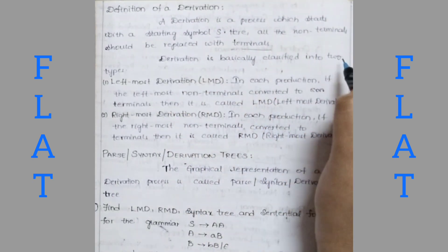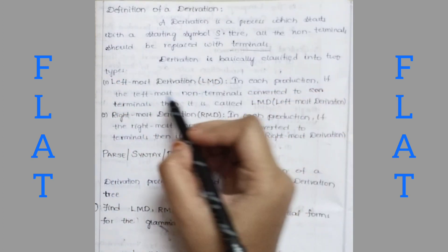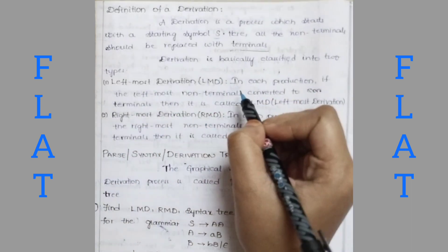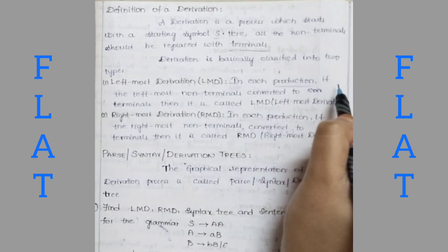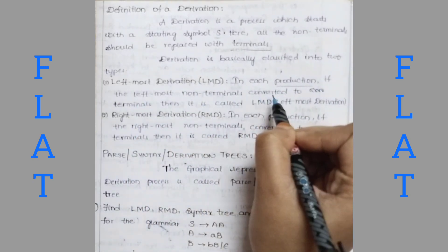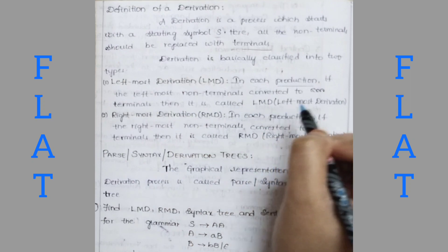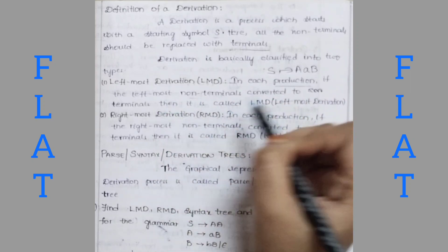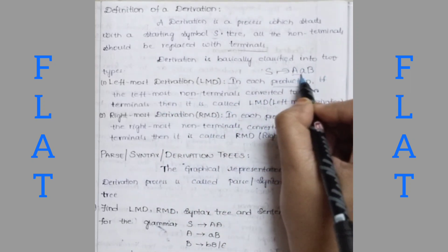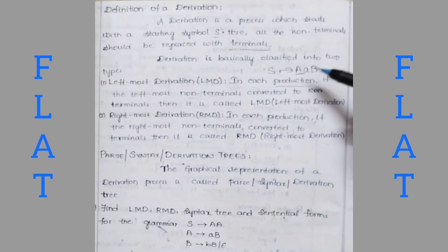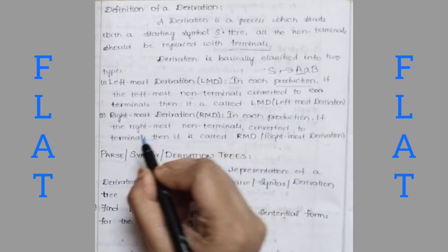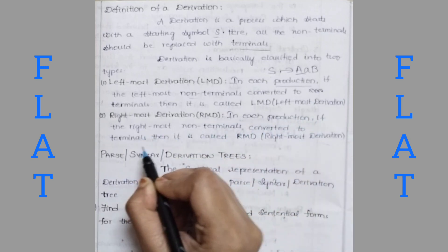Derivation is basically classified into two types: leftmost derivation (LMD) and rightmost derivation (RMD). In leftmost derivation, in each production, if the leftmost non-terminal is converted to terminals, then it is called LMD. In rightmost derivation, if the rightmost non-terminal is converted to terminals, then it is called RMD.